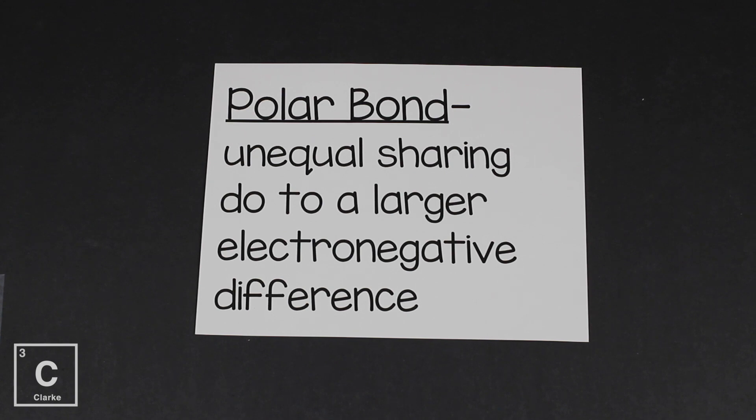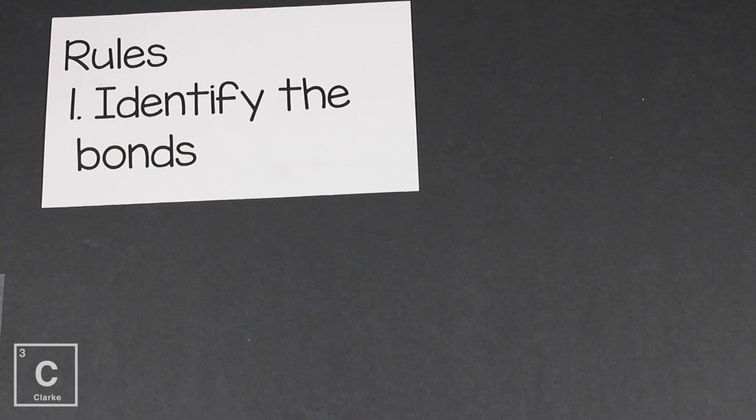Remember, polar bonds happen because of the unequal sharing of electrons. Electrons are unequally shared when there is a larger electronegativity difference. And if it's not diatomic and it's not carbon and hydrogen, it's going to be polar. We're going to have to be able to identify polar and nonpolar bonds so we can figure out polar or nonpolar molecules.